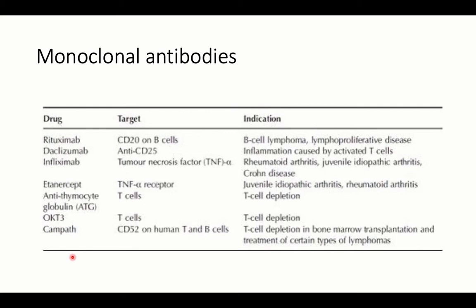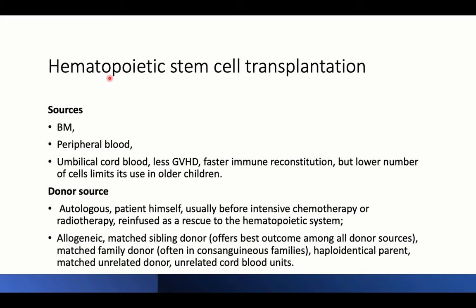Regarding hematopoietic stem cell transplantation, stem cells can be obtained from bone marrow, peripheral blood, or umbilical cord blood through cord blood banks. Umbilical cord stem cells have the advantage of causing less graft-versus-host disease and allowing faster immune reconstitution after transplantation, but being of lower number, they are of limited use in older children.